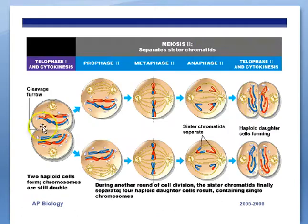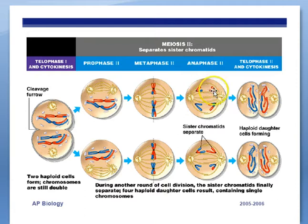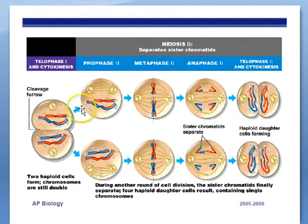During meiosis II, we have two new cells. The prophase part of meiosis II has just the chromosomes condensing. Metaphase II has the chromosomes lining up just like mitosis — no pairs anymore, since we separated those out in meiosis I. During anaphase II, we separate out the sister chromatids. By the end of telophase II, we have two new daughter cells for each of the two cells made during meiosis I, for a total of four haploid cells.